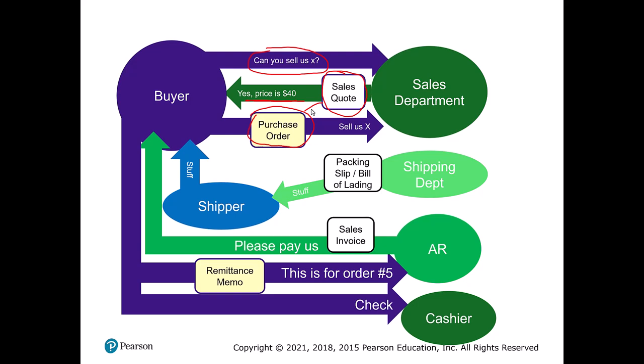Once we get the purchase order, we're ready to send them the goods. Usually the shipping department takes the actual items we're selling and ships them, often through a carrier like FedEx. We pack up, say, a thousand bags of coffee, give it to FedEx, and FedEx delivers it to our buyer. We usually have some kind of documentation in that package — for example, a packing slip or a bill of lading — so that when things arrive at the buyer, they know what they are and what they tie to.